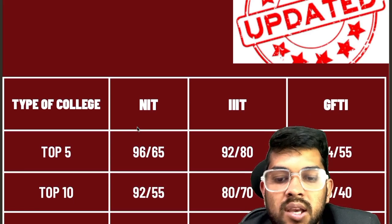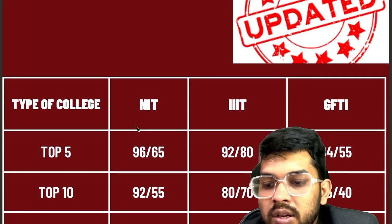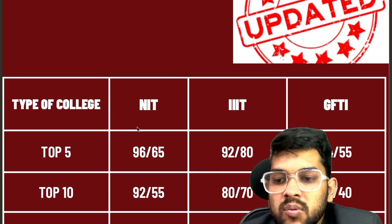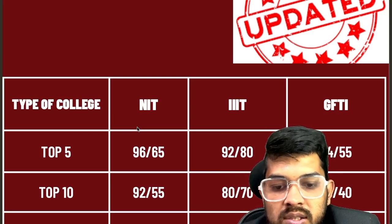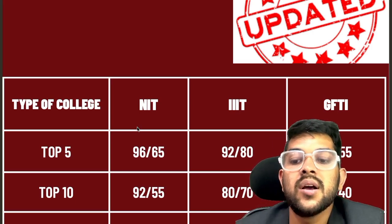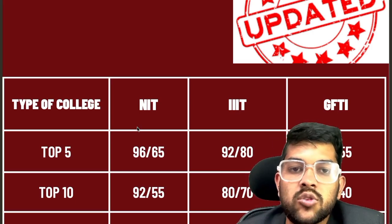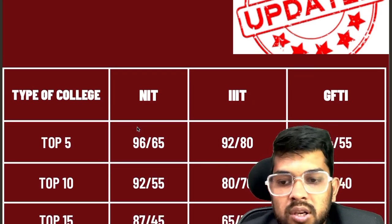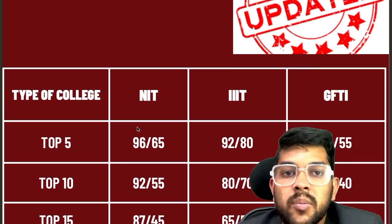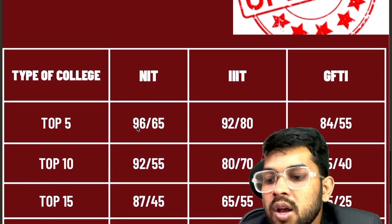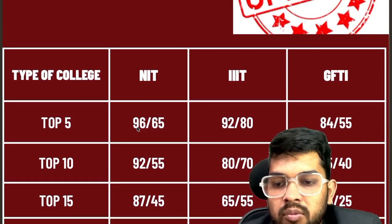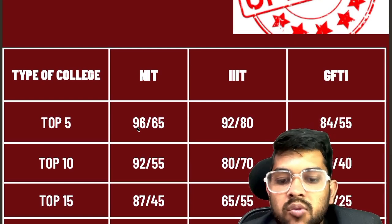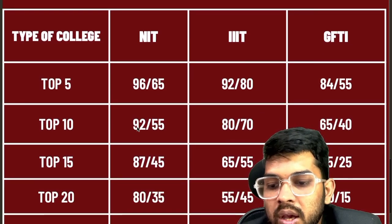For top 10 NIT: 92 percentile for CSE and 55 for lower branches. For Triple IT: 80 and 70. For GFTI: 65 and 40. In Triple IT, only CSE and EC branches are there, so the lower branch cutoff is also higher compared to NIT. In NIT there are many branches like Civil, Mechanical, and Material Science. For top 15 NIT: 87 and 45. For Triple IT: 65 and 55. For GFTI: 45 and 25.